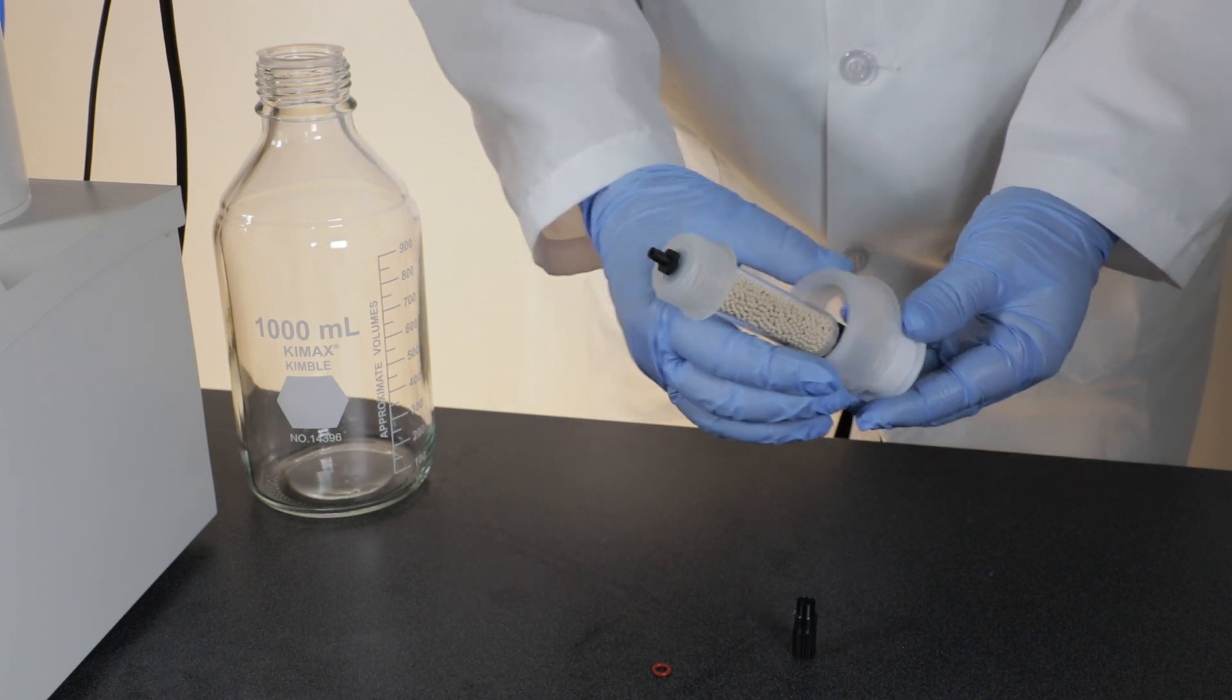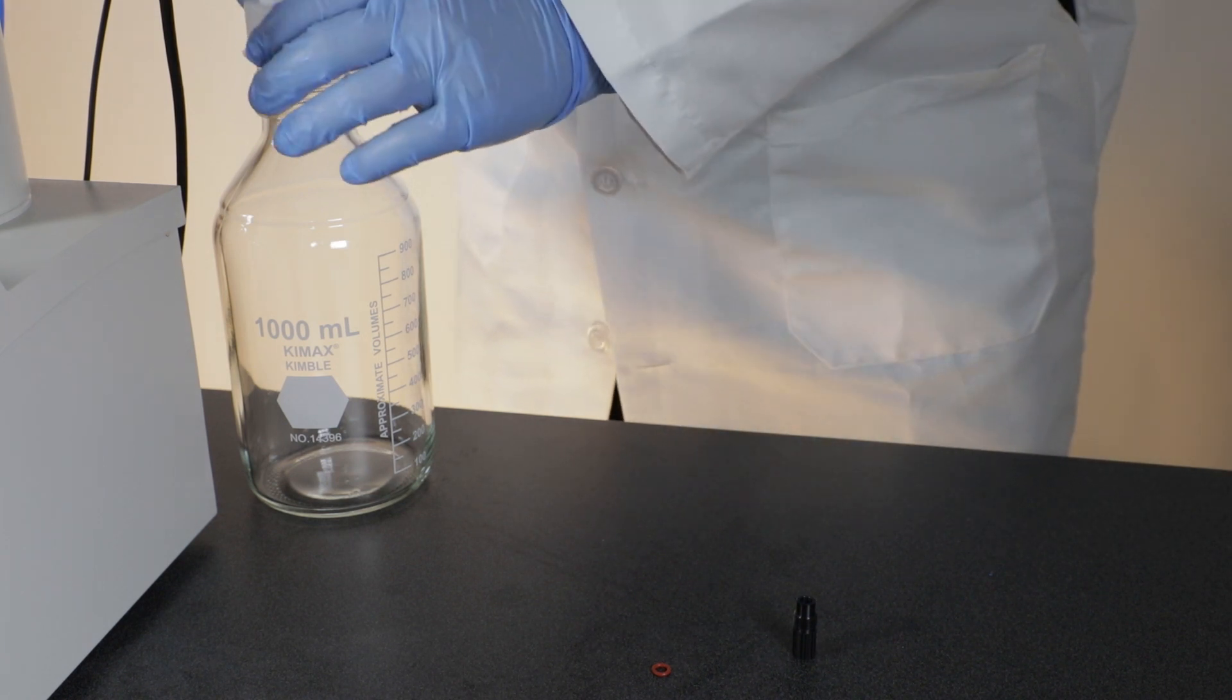Next, place a GL45 clear bottle screw cap over the assembly and screw it onto the waste bottle.